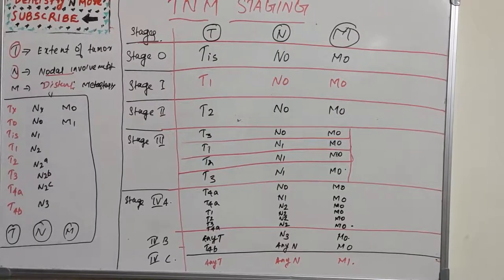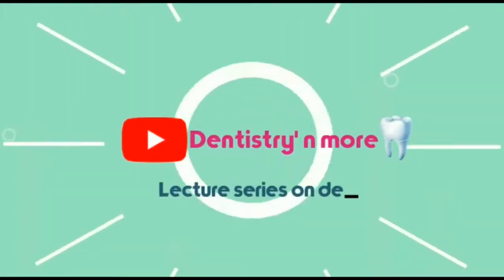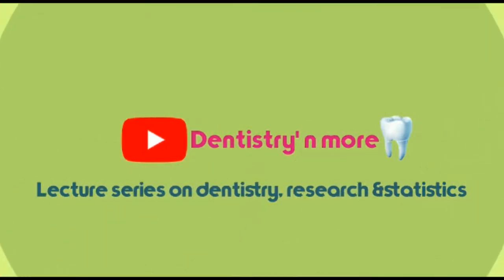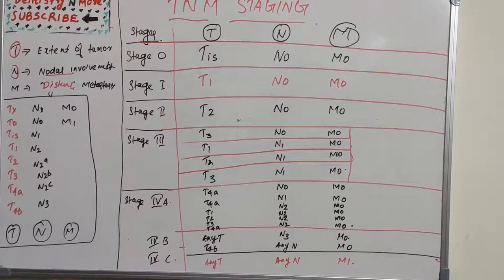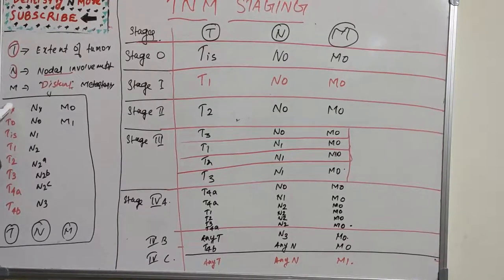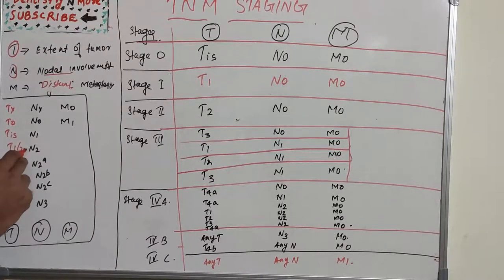Let's learn TNM, starting with extent of tumor. We have TX, T0, T in situ, T1, T2, T3, T4A, and T4B. TX is primary tumor which cannot be assessed. T0 is no evidence of primary tumor. TIS is carcinoma in situ. T1 is tumor which is 2 centimeters or less in dimension.